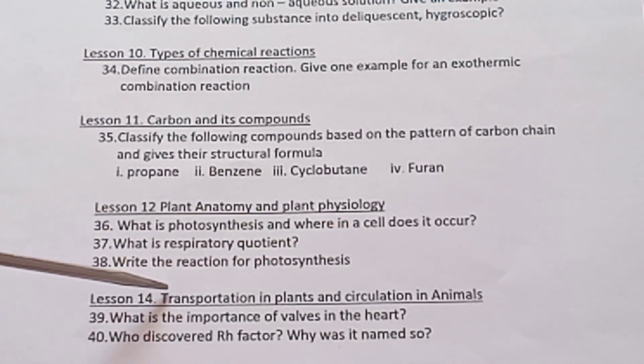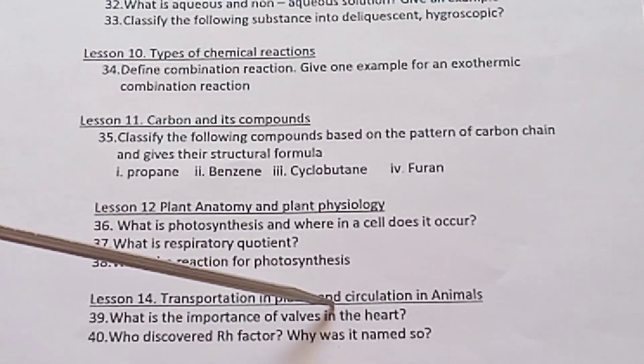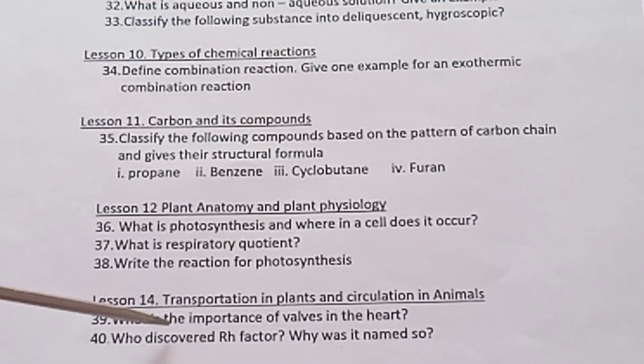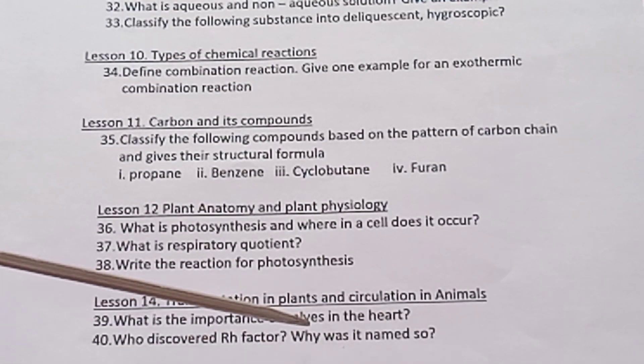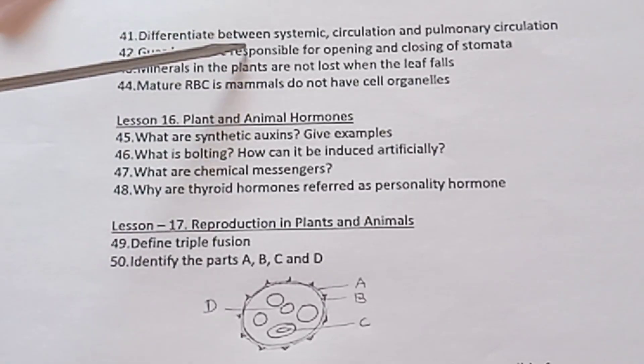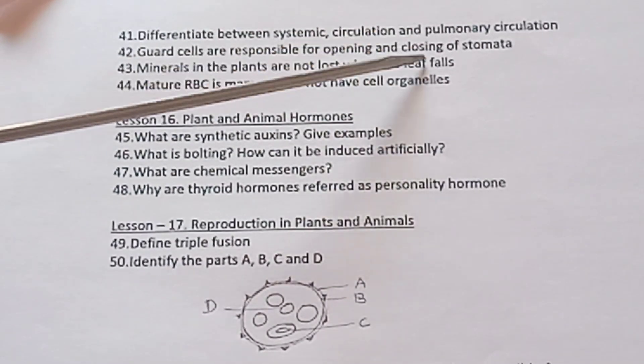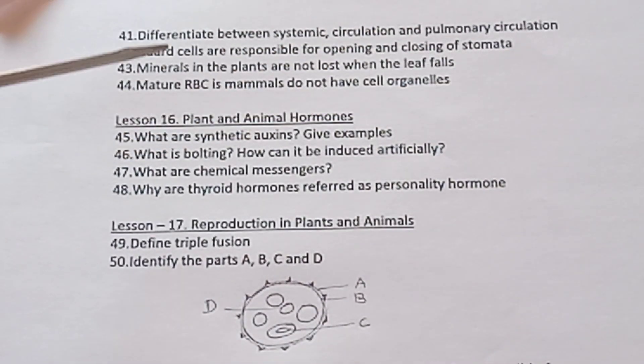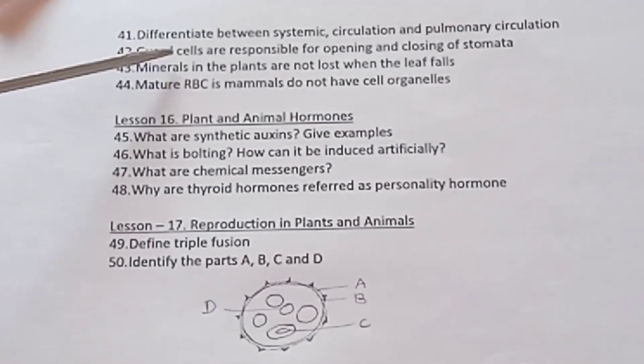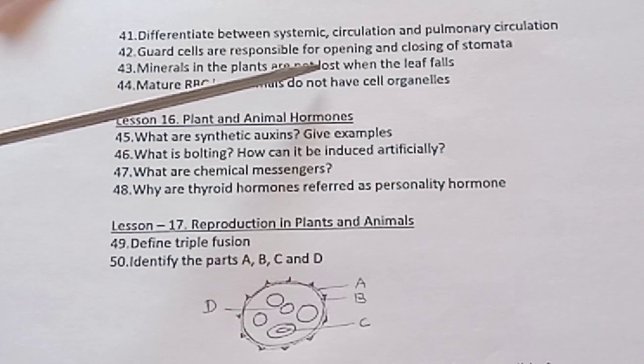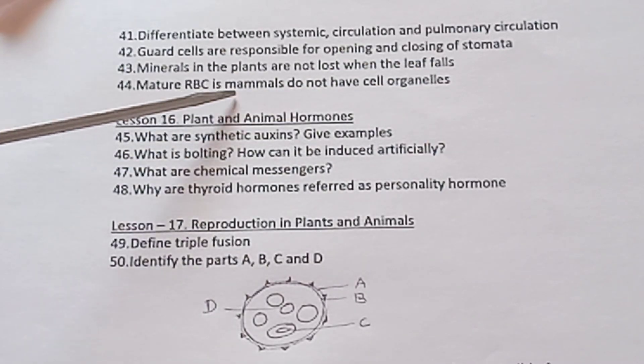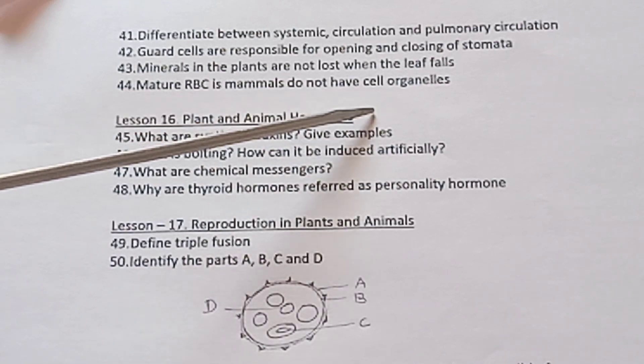Lesson 14 Transpiration in Plants and Circulation in Animals. What is the importance of valves in the heart? Who discovered Rh factor and why was it named so? Differentiate between systemic circulation and pulmonary circulation. Guard cells are responsible for opening and closing of stomata. Minerals in the plant are not lost when the leaf falls. Mature RBC in mammals do not have cell organelles.